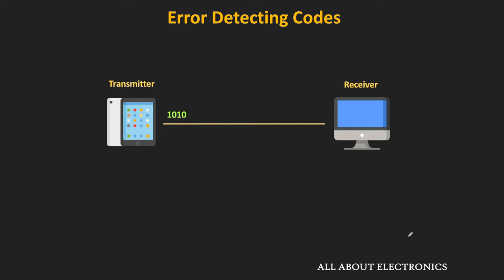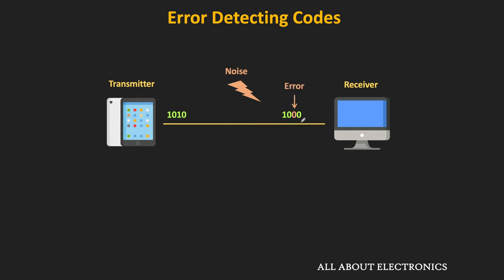When the data is transmitted between two digital devices, due to external noise or interference, sometimes a few bits get corrupted in the data. Because of that, at the receiver side, the 1 is received as 0 and the 0 is received as 1. For example, the transmitter is sending 1010 — or 10 in decimal — but at the receiver, if there is an error in 1 bit, it might be received as 1000, or 8 in decimal. So because of this error in 1 bit, the entire data will get changed.